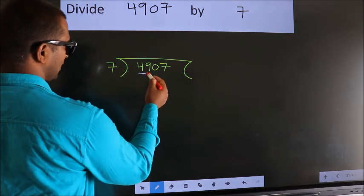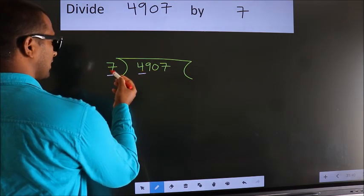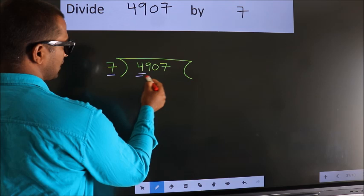Here we have 4. Here 7. 4 smaller than 7. So we should take 2 numbers, 49.